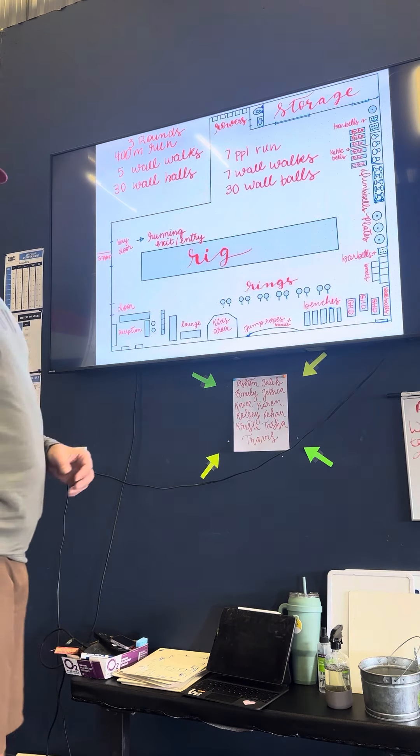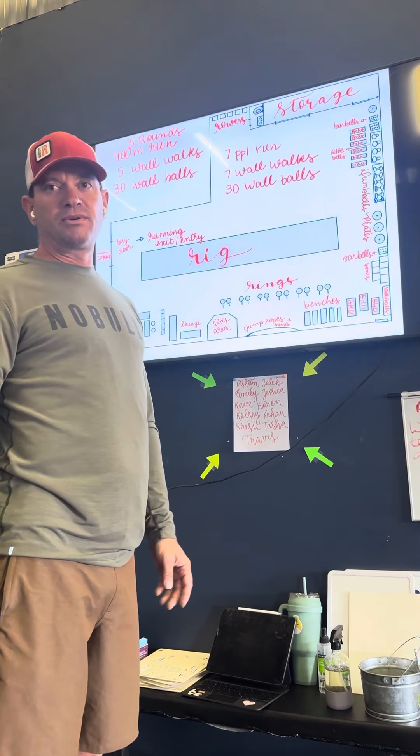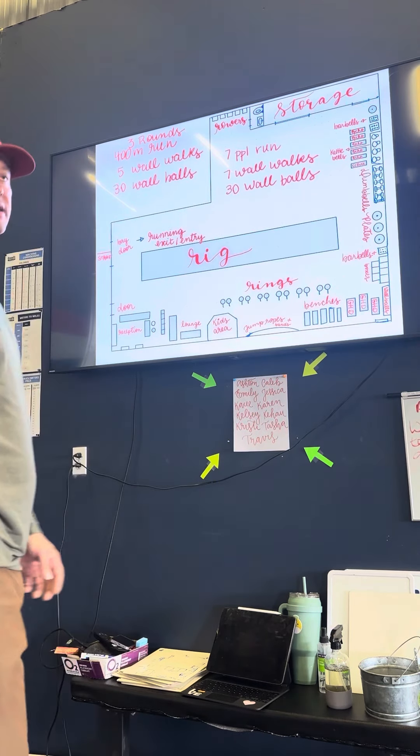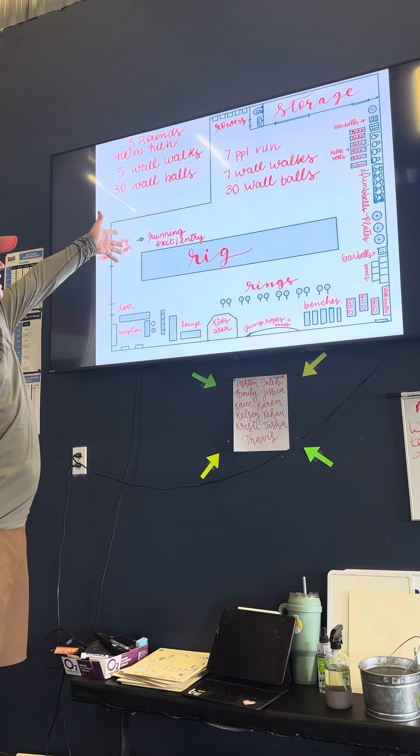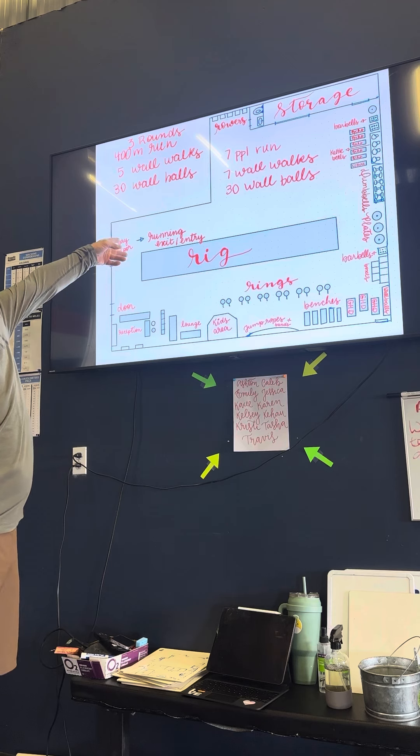I'm going to flip this up. We're going to go about seven people on the run, seven people on wall walks, and six on the wall balls or so. Here's our run. Our athletes are going to start here. So I'm going to start seven on the run.